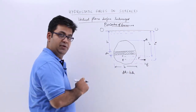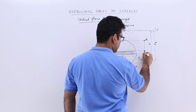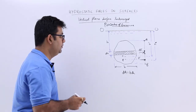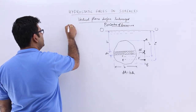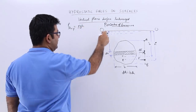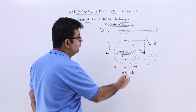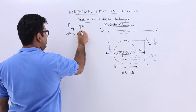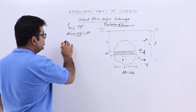Let us say the force acting on this strip is DF — it is a very small strip. The pressure on this strip is P = ρgH, because it is at a depth of H from the free surface. Due to this pressure, there will be a pressure force DF on the strip, which is equal to the pressure into the area DA. So DF = ρgH · DA.